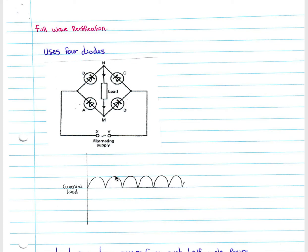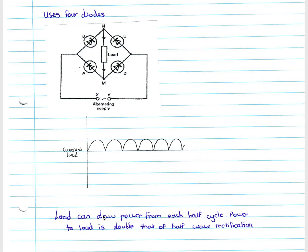We now have the second half of our current — we don't lose it. It is flipped to the top and flows in the same direction as our first half of the current. Through full wave rectification we get it flowing in the same direction as shown, and therefore our load receives the full current.